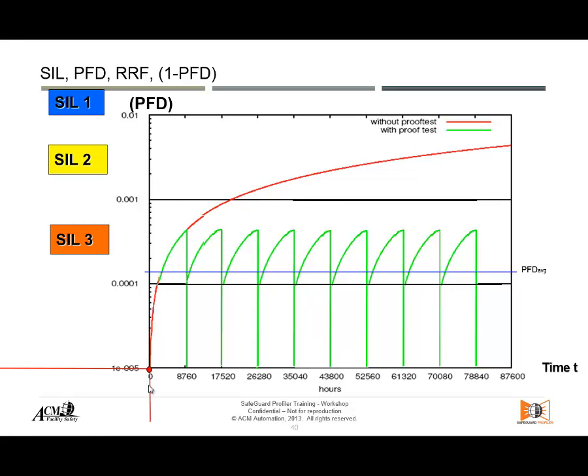How do we explain these probabilities of failure on demand in time? Everything eventually fails, and how often things fail depends on the characteristics of the equipment. As soon as equipment starts working, it gets stressed, and those stresses eventually cause failure if nothing is done. We don't want equipment to fail when required to work. Using IEC 61511 standards, we assume we are using equipment that is reliable, fit for purpose, and proven in use — just like Safeguard Profiler itself. We plot this in a graph to find the average probability of failure on demand.